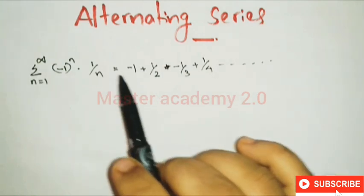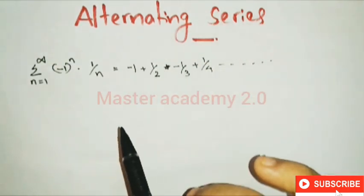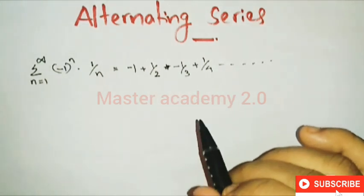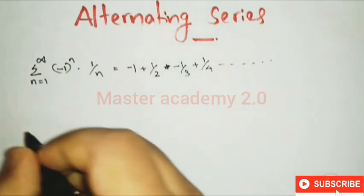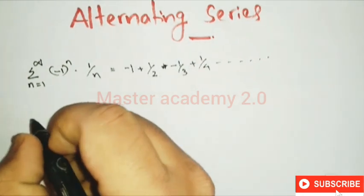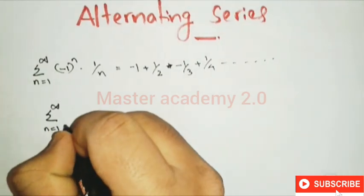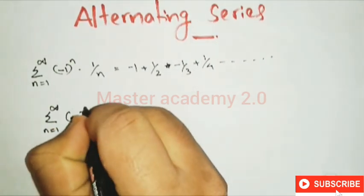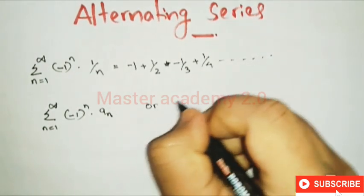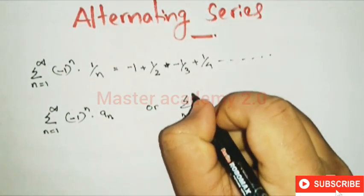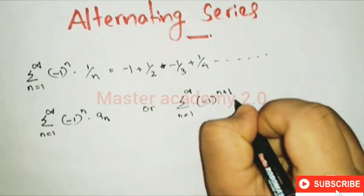So the sign alternates and changes in the series — this is an alternating series. The general form of an alternating series is: summation n equal to 1 to infinity of minus 1 raised to n times a, or summation n equal to 1 to infinity of minus 1 raised to n plus 1 into a.